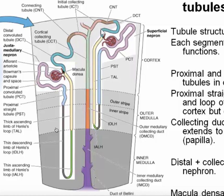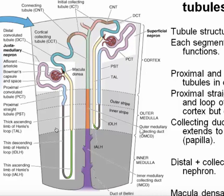Although it's called the collecting duct, it does a lot more than collect — it does a lot of modification of the final urine. The collecting duct plunges down through the cortex as the cortical collecting duct, and then down through the medulla as the outer medullary and inner medullary collecting duct. It's only when fluid exits from the inner medullary collecting duct at the tip of the medulla that it becomes the final urine. We tend to lump anything downstream from the loop of Henle together, referring to the distal convoluted tubule and the collecting duct as the distal nephron.